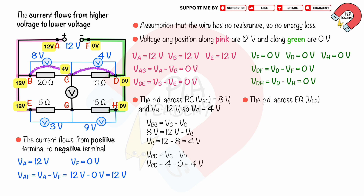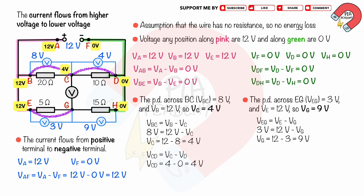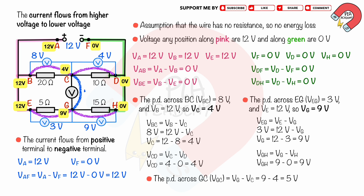The PD across EG equals 3 volts, and the voltage at point E equals 12 volts, so the voltage at point G equals 9 volts. The PD across GH equals voltage at G minus voltage at H, which is 9 minus 0, equal to 9 volts. The PD across GC equals voltage at G minus voltage at C, which is 9 minus 4, equal to 5 volts.